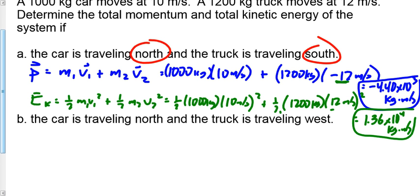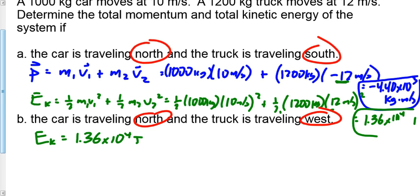Now, question B changes a little bit. Car's traveling north and the truck is traveling west. North and west, that's not as simple as a positive and negative, is it? Let's do kinetic energy first. What's the kinetic energy of this car and truck system? It's the same thing, 1.36 times 10 to the 4. Why is it the same thing? It's a completely different direction, I'm going west instead of south. Why is the kinetic energy the same thing? Because kinetic energy is a scalar. The directions are irrelevant.